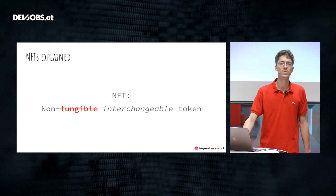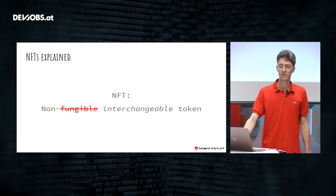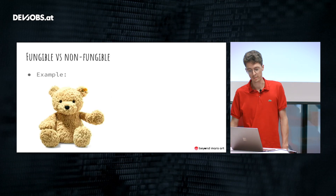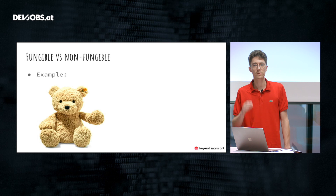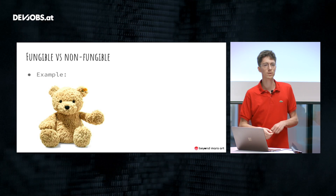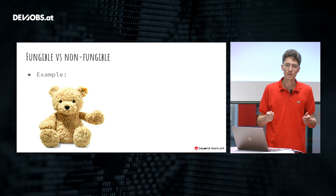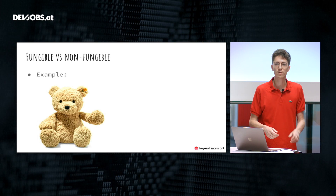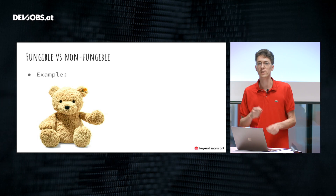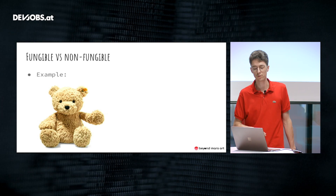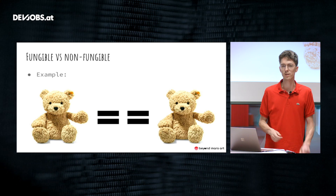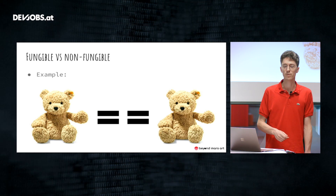Let me illustrate this with an example. A couple of years ago my son was born and I went to the store and bought a teddy bear. In that store there were 20 of the same teddy bears — I didn't care which one I took, so one was just like the other. They were fungible.